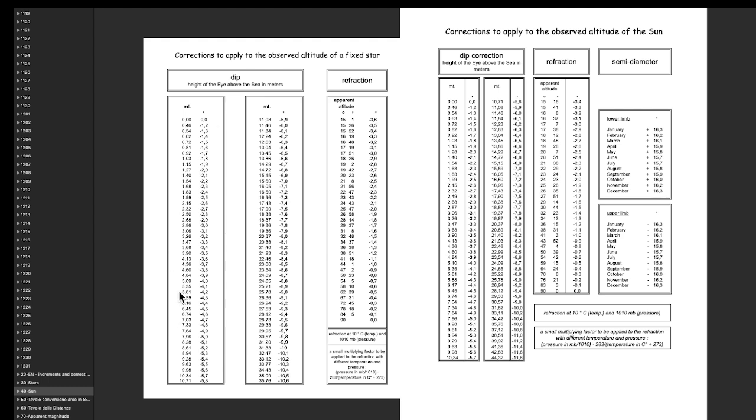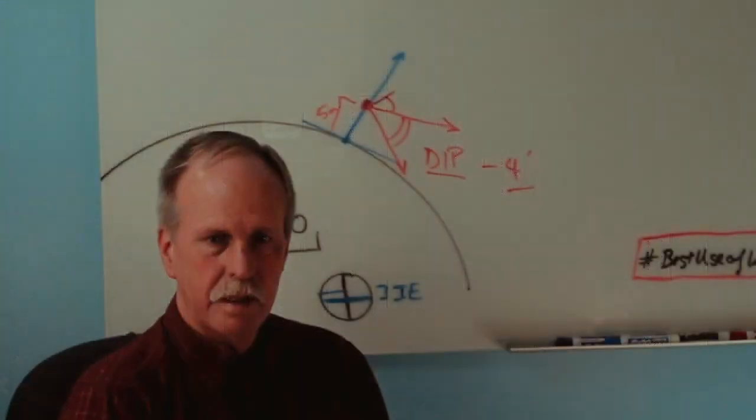However, if you're five meters above the sea, you're going to have to subtract four minutes from your sextant reading in order to get an accurate angle to the sun from your horizontal at your height above the sea.